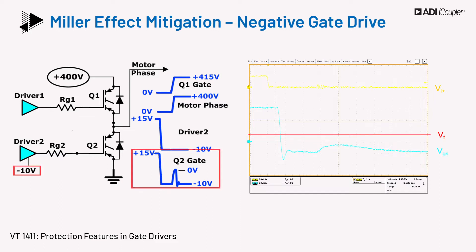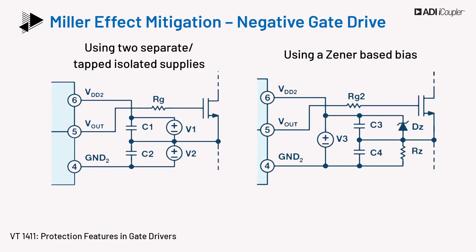As shown in the figure on the left, some gate drivers inherently support a bipolar supply, and these can be easily used for mitigating Miller injection by bringing the gate-to-source voltage negative during turn-off. For drivers which do not support a negative supply, bipolar supply operation can still be obtained using a Zener diode to set either the negative or positive voltage. Either method can be used to offset the emitter terminal of the IGBT with respect to the gate driver's ground terminal.